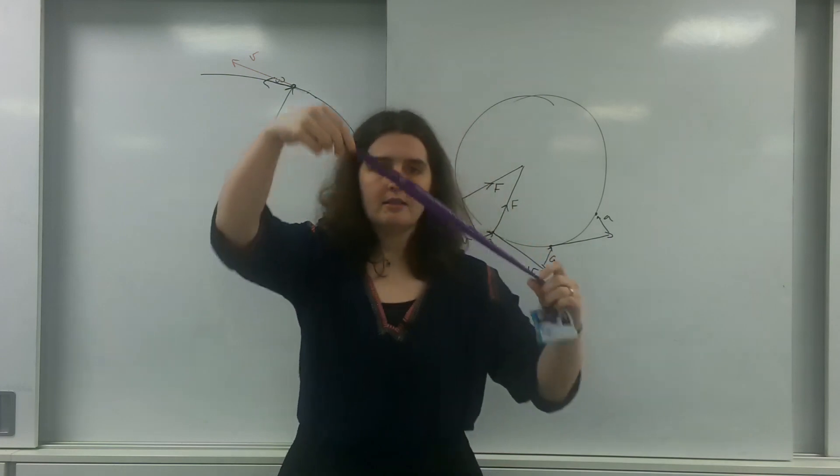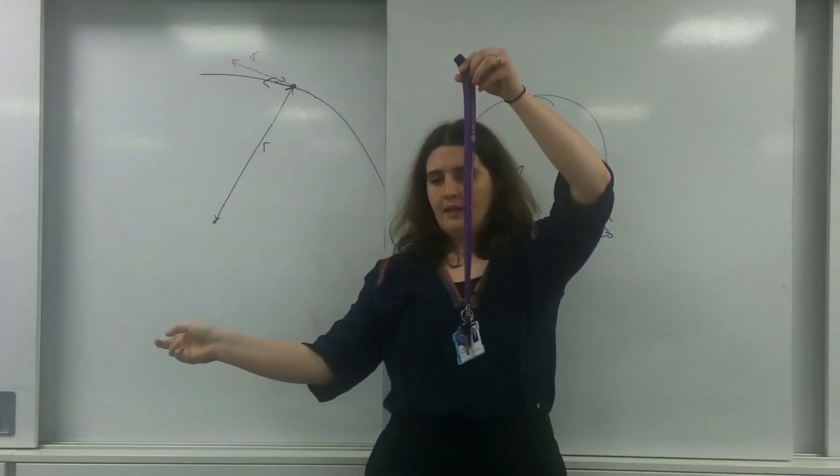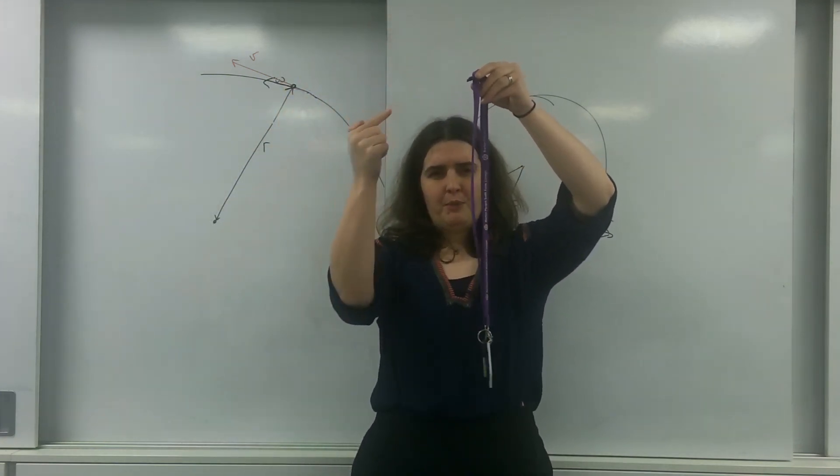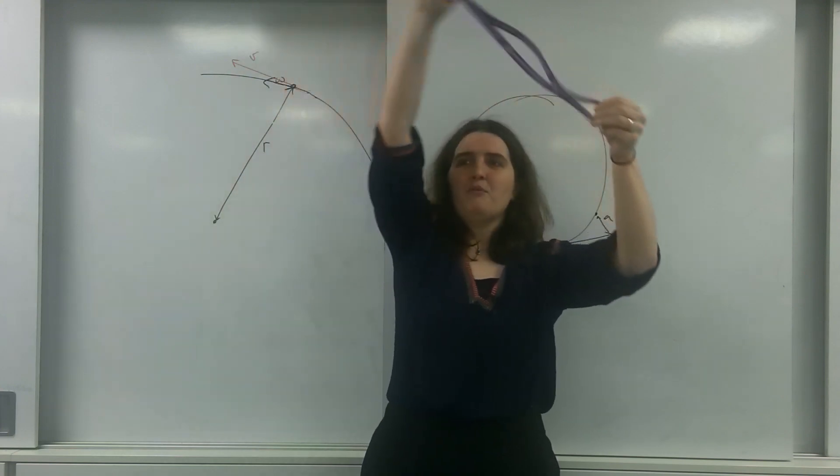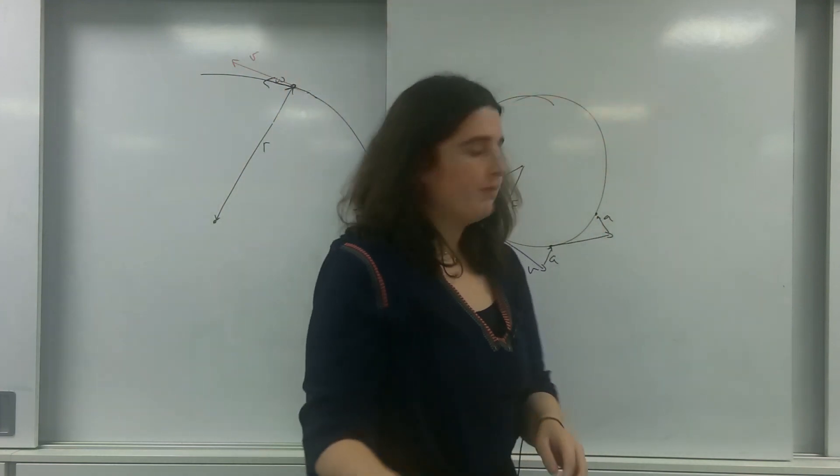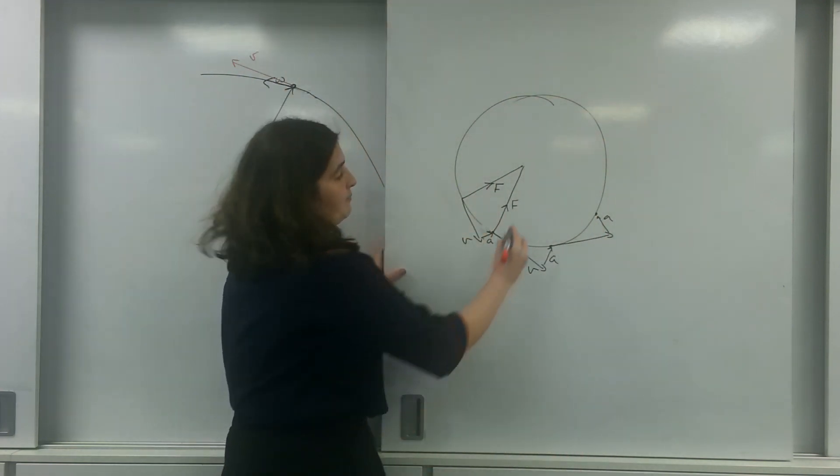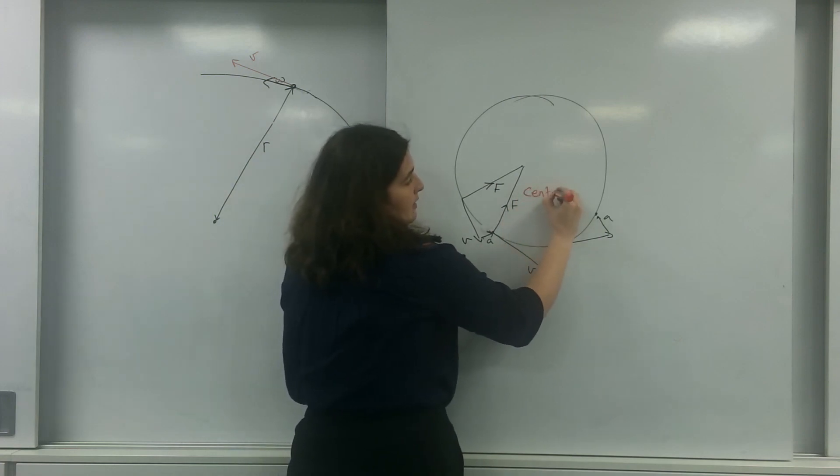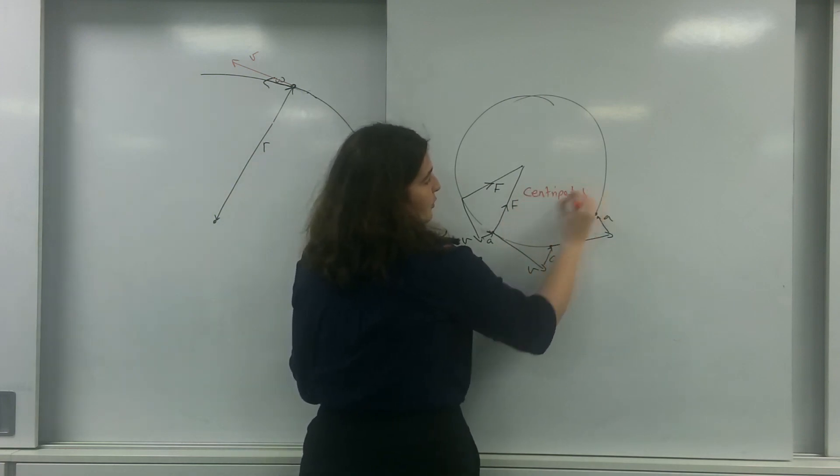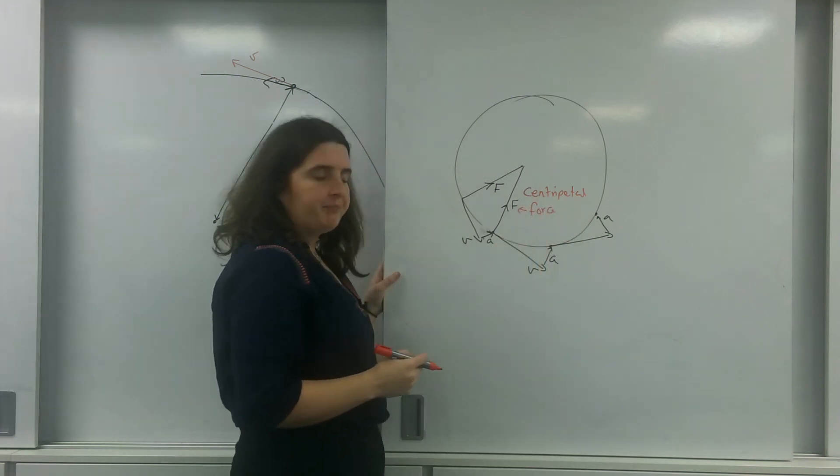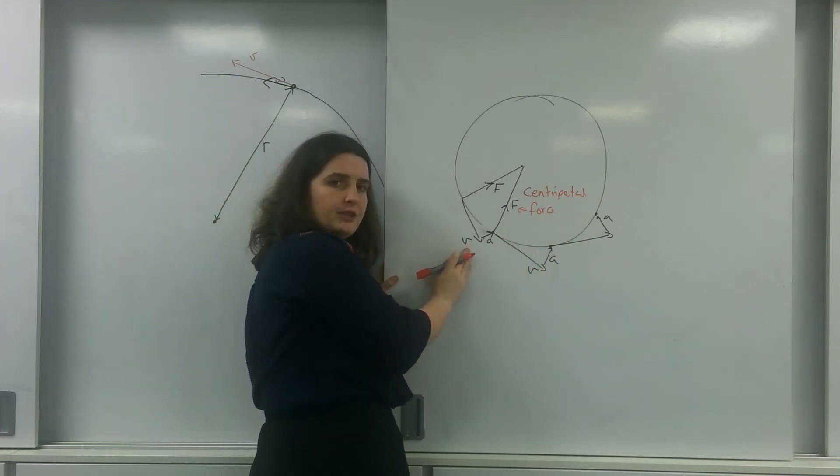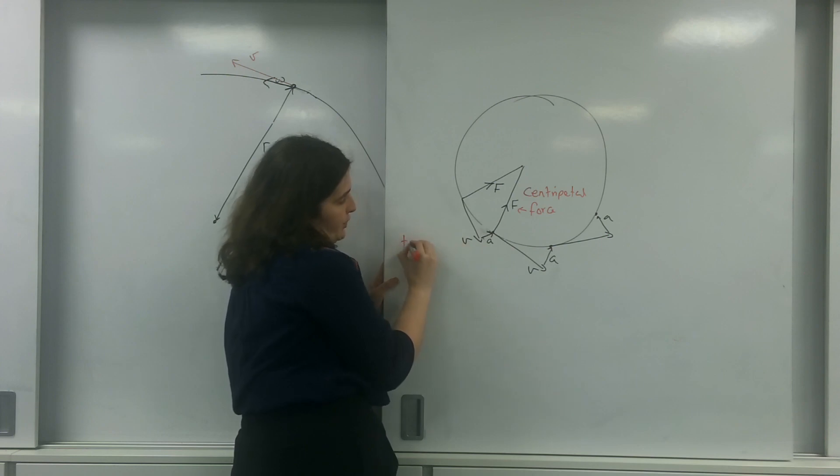And that's what's actually happening at every point. But what's happening is this object is having a velocity this way, but acceleration is pulling it this way. So, it's going to keep moving into the centre of the circle. And this force here is called a centripetal force.